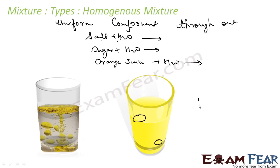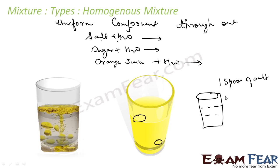Please note: in a homogeneous mixture the composition throughout is the same, but the overall composition may differ between mixtures. For example, take a glass of water and add one spoon of salt; in another glass add two spoons; in another add three spoons. All these are homogeneous mixtures, but their compositions are different — we will talk about that.